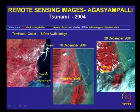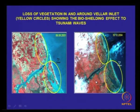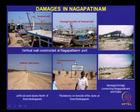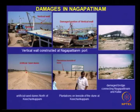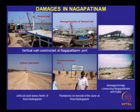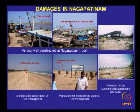Chennai is here and all these places show the shielding effect. There was a lot of damage at Nagapatnam — huge concrete bridge girders collapsed right inside the thickly populated town. Some of these areas immediately thought of some kind of plantation, though I do not know the status as of now. There is also damage to a portion of the vertical wall which was damaged.